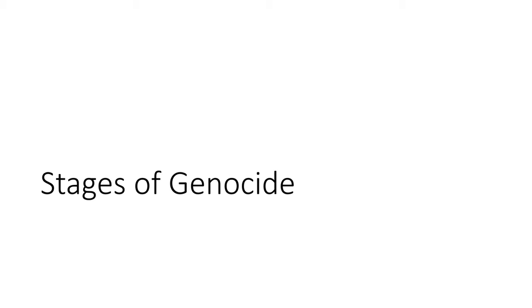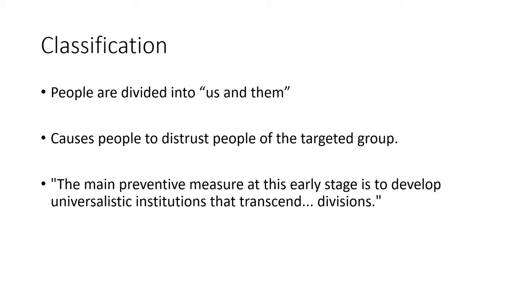The UN has listed stages of genocide so we can learn to recognize when terrible things are about to occur. The first step is classification — when people are divided into groups, us versus them — causing people to distrust the targeted group. The last line of each slide will describe how to stop genocide at that particular stage. At the classification stage, the preventative measure would be to develop universalistic institutions that transcend divisions, getting everyone in the nation involved regardless of group identity.